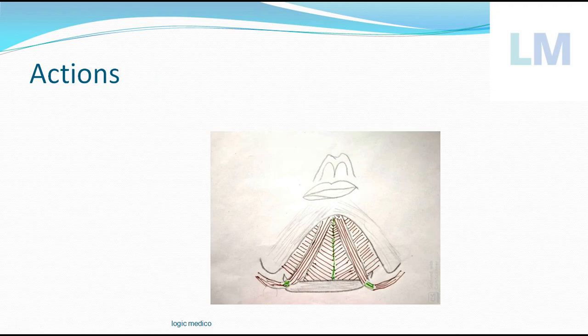Coming to the action. This Mylohyoid muscle, if it acts from below, it will depress the mandible. If the Mylohyoid muscle acts from below, it will pull the mandible down. That is opening of the mouth or depression of the mandible.